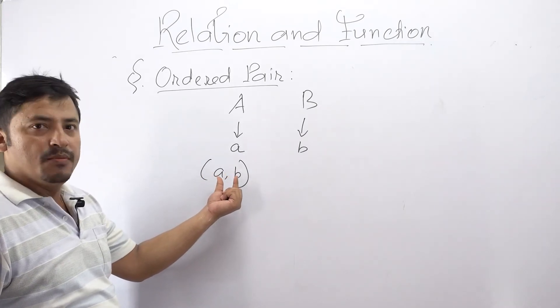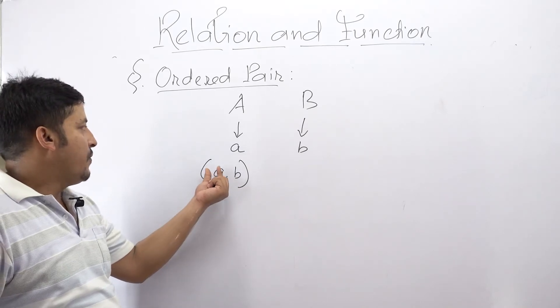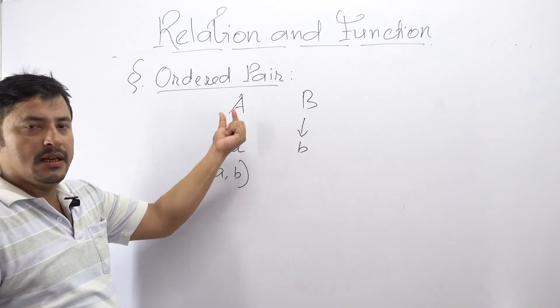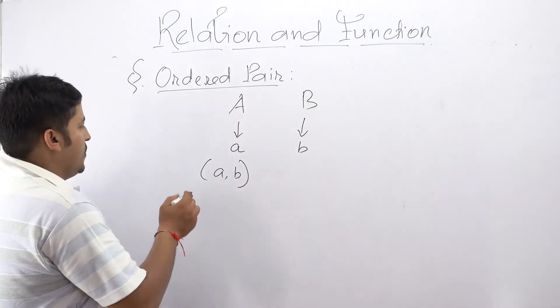Always the elements should be written within first bracket and the important thing is that the first element is an element of the first set and the second element is an element of the second set. So after ordered pair.